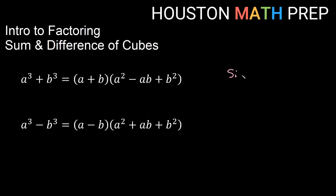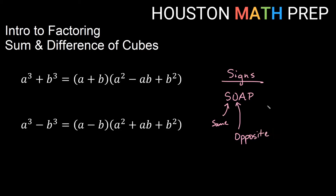The way we'll remember how the signs are placed inside these factors is we use the SOAP method. SOAP stands for: S — Same, O — Opposite, A-P — Always Plus. Looking at the sum of cubes formula, we start with addition. Applying SOAP to each sign: the first sign is the Same as what we started with (plus), the second is the Opposite (minus), and the last is Always Plus.